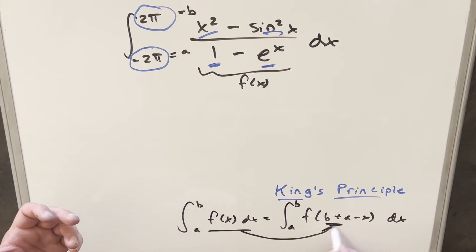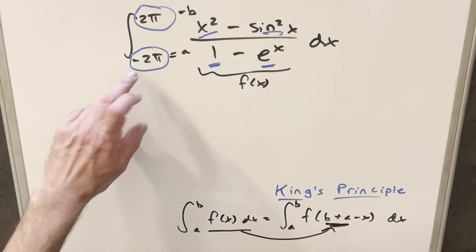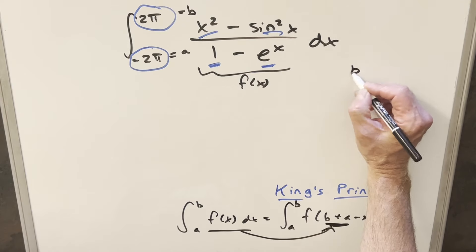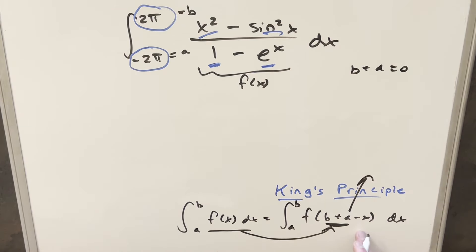The reason this is nice is because when we do b + a, b + a here, that's just going to be equal to 0. So for this transform value here, because b + a is 0, we just end up with f(-x).